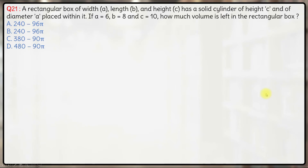Hello everyone. We have in this question a rectangular box of width A, B and height C. A solid cylinder of height C and of diameter A is placed within it. If A, B and C are 6, 8, 10, how much volume is left in the rectangular box?